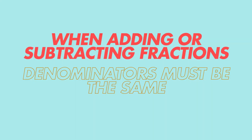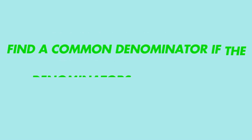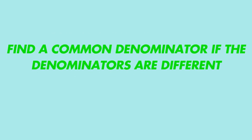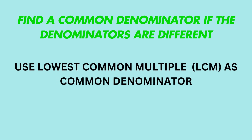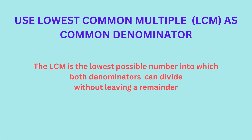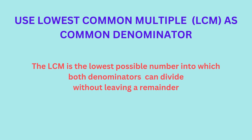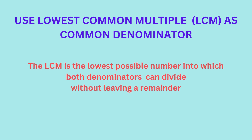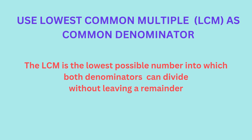When adding or subtracting fractions, the denominators must be the same. If the denominators are different, our first step is to find a common denominator. The easiest way is to use the lowest common multiple, LCM, of the two denominators. The LCM is the smallest number into which the denominators can divide without leaving a remainder.